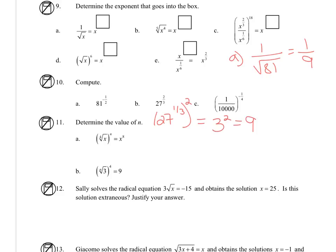Now for c, 1 to any power is still 1, and then I'm going to have my 10,000 to the negative 1 fourth. So the negative is going to move that to the numerator for me. So what times itself 4 times is 10,000 is 10.